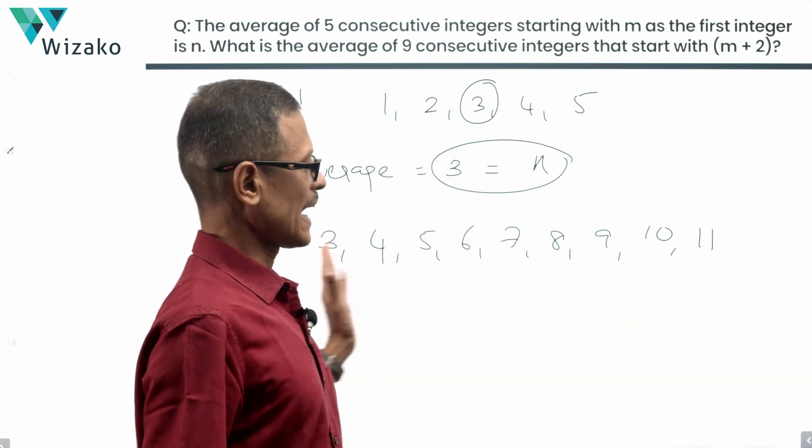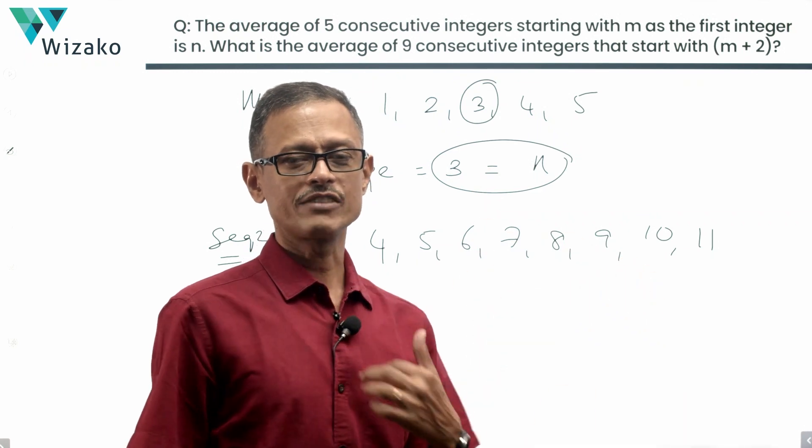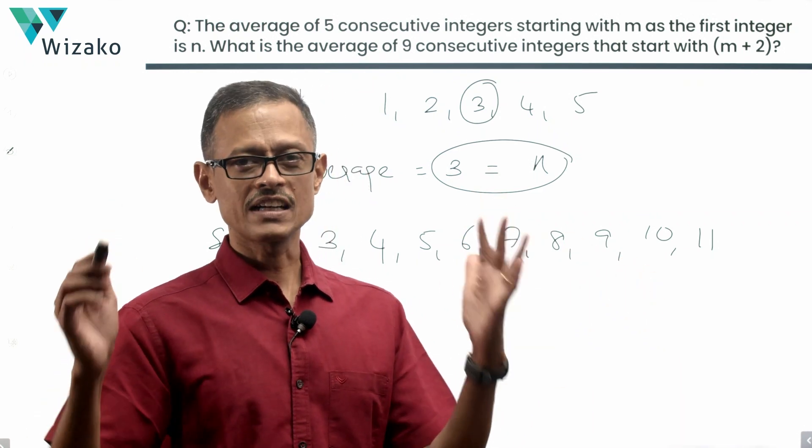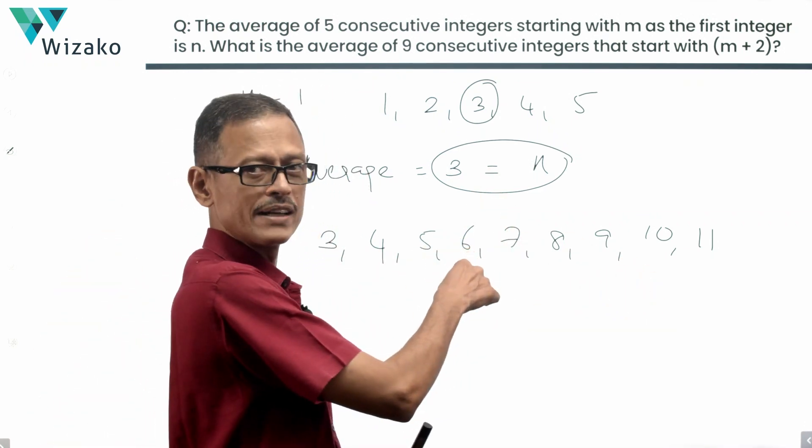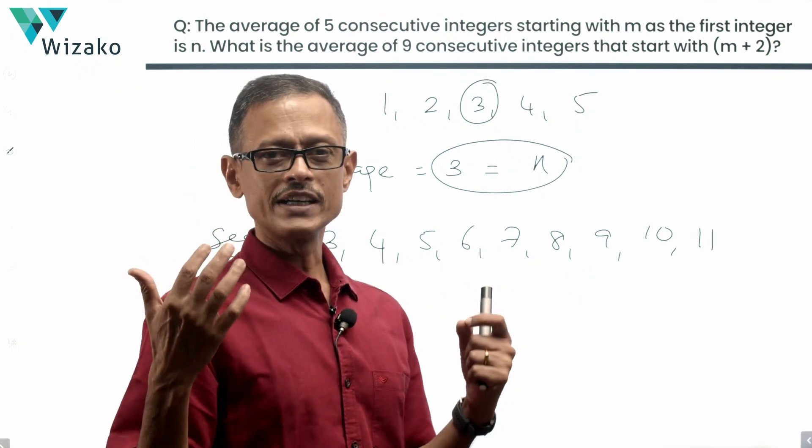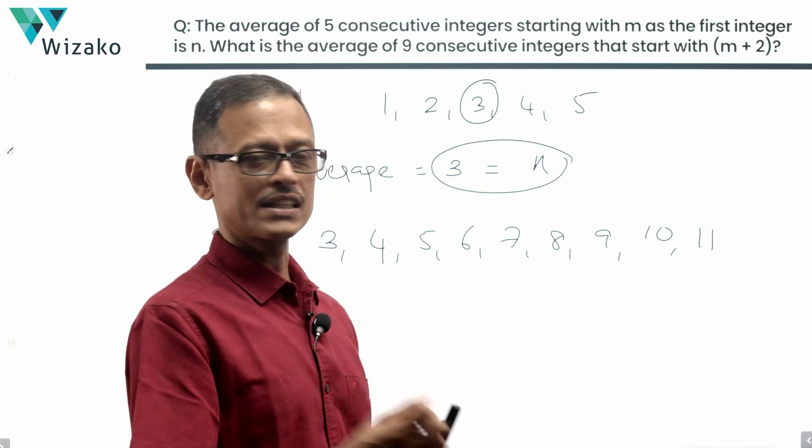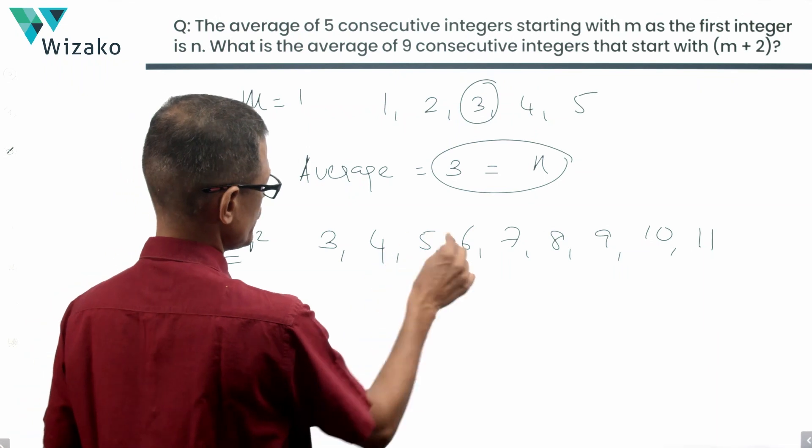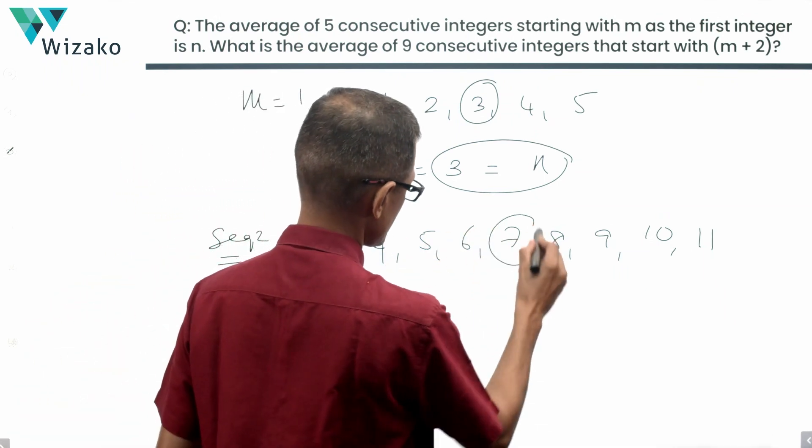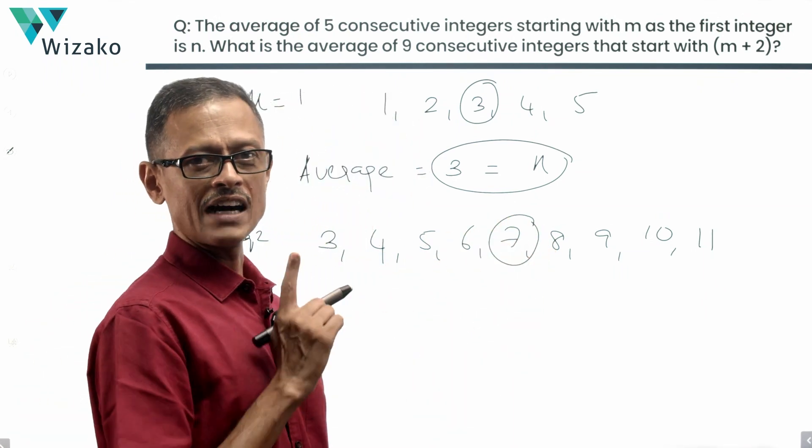As I mentioned earlier, you can add all of these numbers, divide it by nine and find the answer. Or because it's an arithmetic progression with a common difference of one, the middle term is going to be the average. We have nine terms. The middle term is the fifth term: 1, 2, 3, 4, 5. So this is the average. 7 is the average. 7 is the average for the sequence.